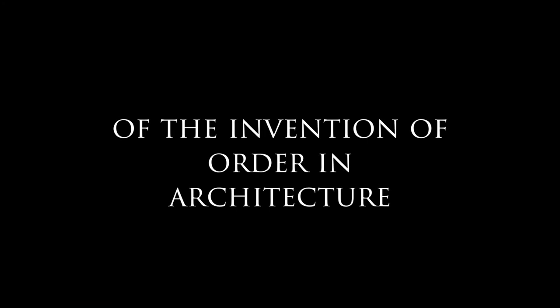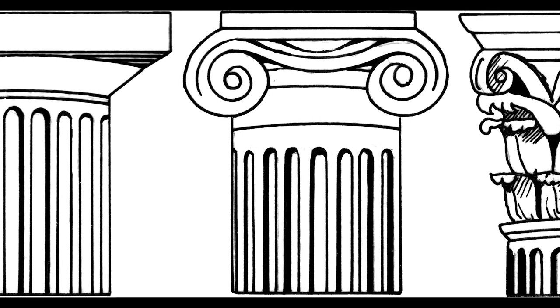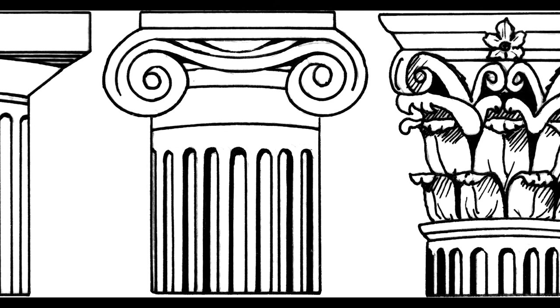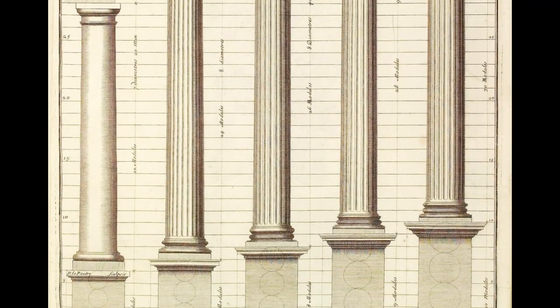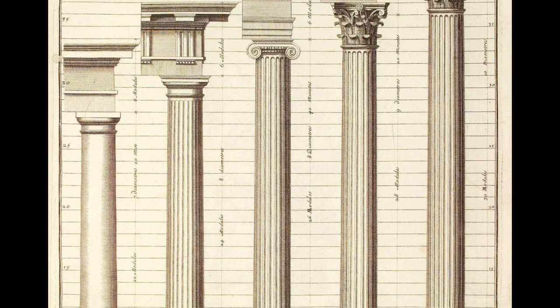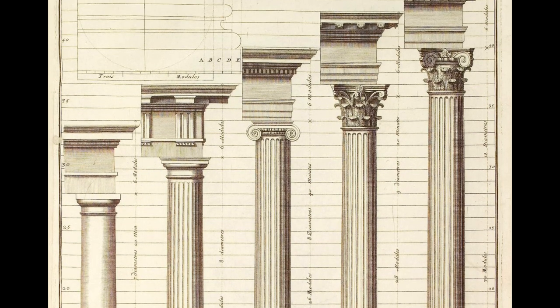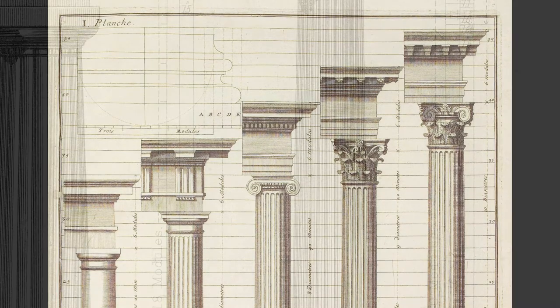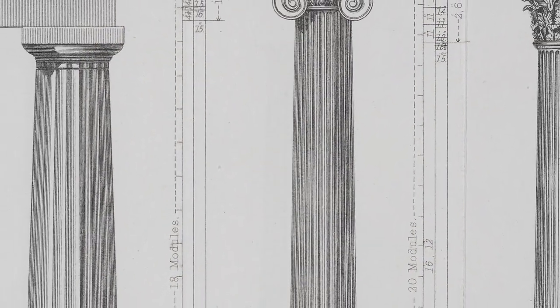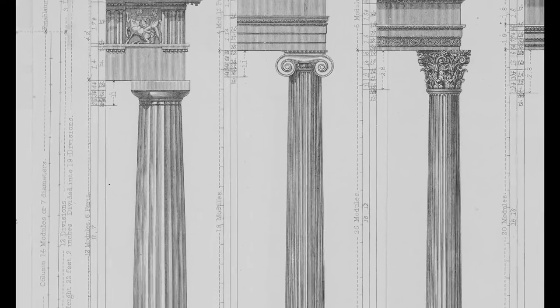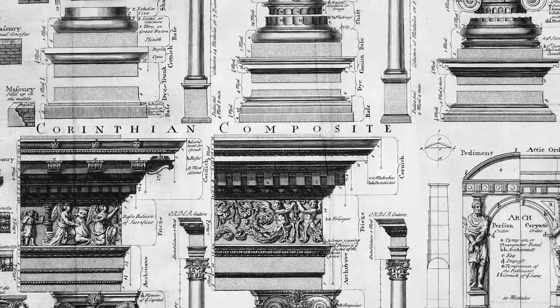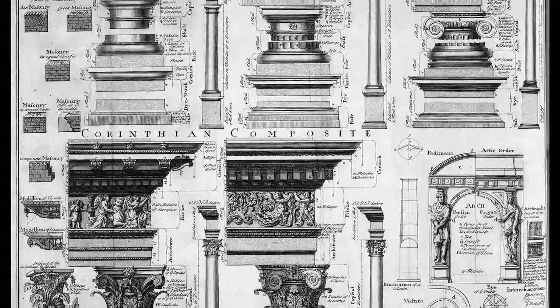Of the invention of order in architecture. The ancient and original orders of architecture revered by Masons are no more than three: the Doric, Ionic, and Corinthian, which were invented by the Greeks. To these, the Romans have added two: the Tuscan, which they made plainer than the Doric, and the Composite, which was more ornamental, if not more beautiful, than the Corinthian. The first three orders alone, however, show invention and particular character, and essentially differ from each other. The two others have nothing but what is borrowed, and differ only accidentally. The Tuscan is the Doric in its earliest state, and the Composite is the Corinthian enriched with the Ionic.